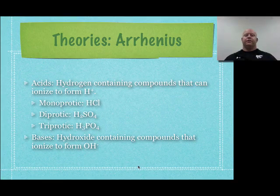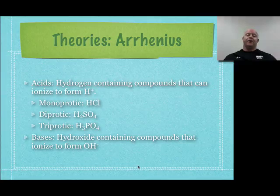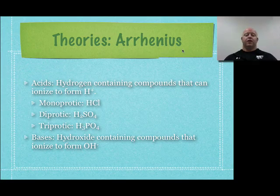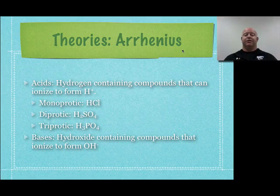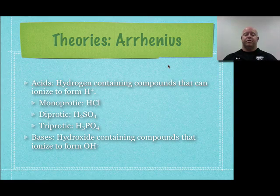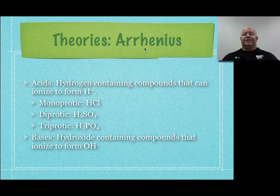We're going to start talking about some different theories on acids and bases and how people define them in history. The first theory came from Arrhenius, and his theory focused on hydrogen and hydroxides — things we can very easily distinguish for our acids and bases. This theory is still valid and encompasses everything; there's nothing wrong with it. The problem — the reason we're going to have two more theories after this — is that Arrhenius' theory is too narrow.